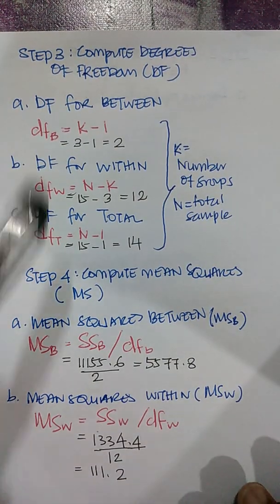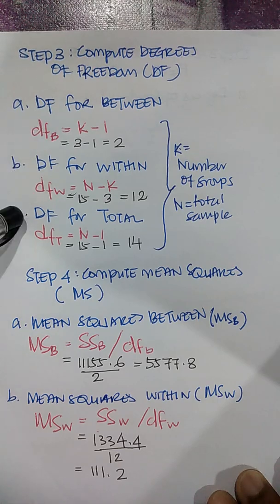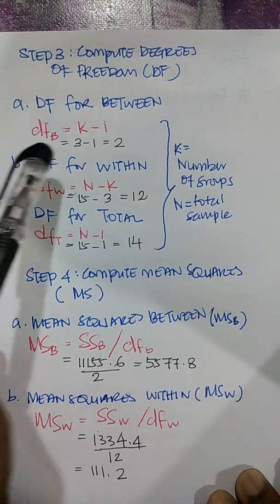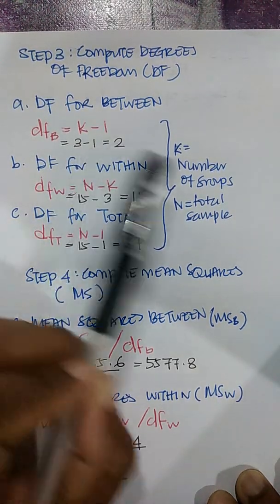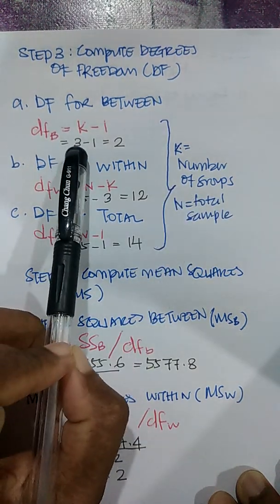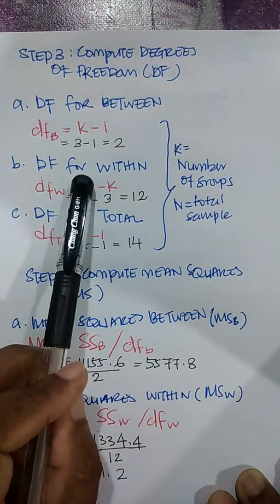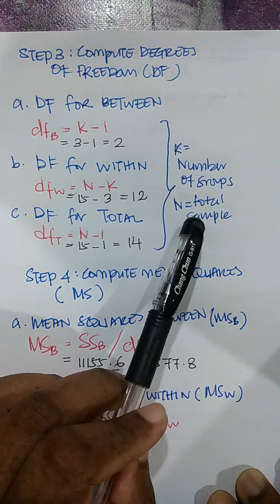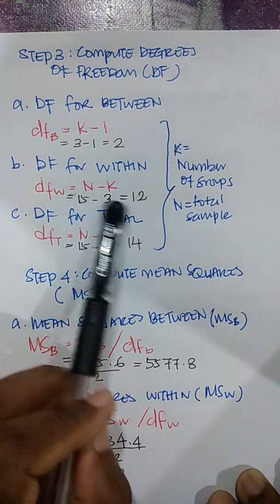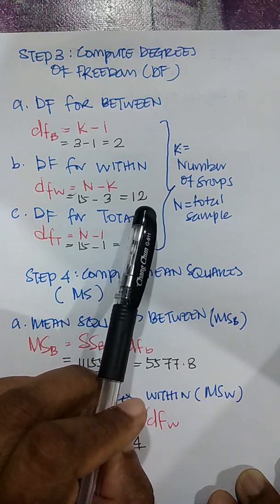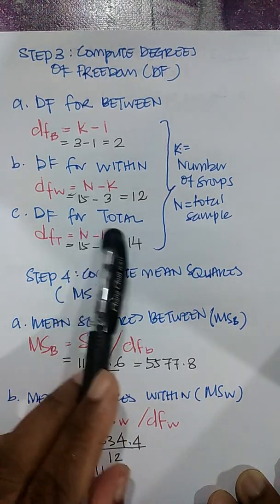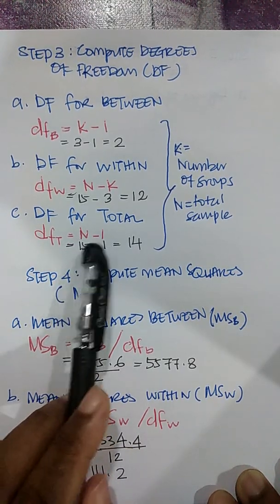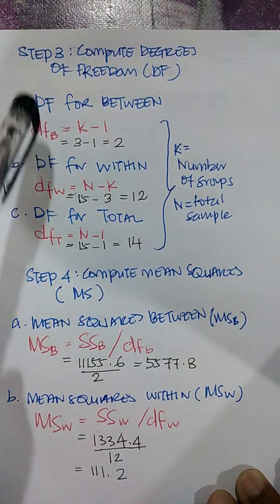Step 3 is to compute the degrees of freedom. There are three: between, within, and total. For between, the formula is k minus 1 — k is the number of groups, so 3 minus 1 equals 2 degrees of freedom. For within, the formula is N minus k — 15 total cases minus 3 groups equals 12 degrees of freedom. For total, it is N minus 1 — 15 minus 1 equals 14 degrees of freedom.